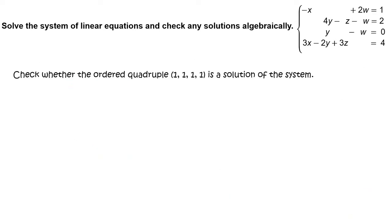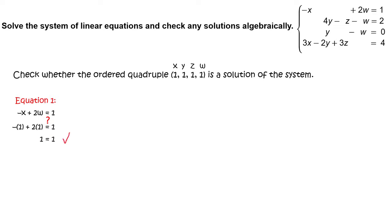Check whether the ordered quadruple (1, 1, 1, 1) is a solution of the system. First, write equation 1: negative x plus 2w equals 1. Substitute 1 for x and 1 for w, and simplify to get 1 equals 1, which is a true statement, so the ordered quadruple is a solution of equation 1.